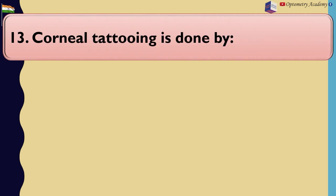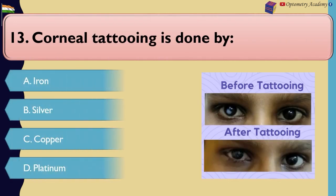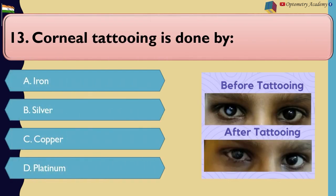Corneal tattooing is done by: A. Iron. B. Silver. C. Copper. D. Platinum.